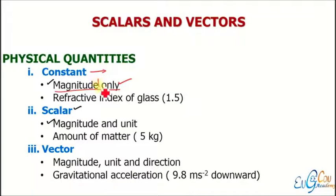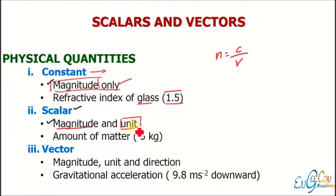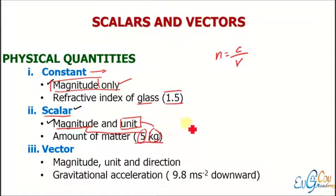For example, the refractive index of glass is represented as 1.5. Refractive index n equals c over v, which is a ratio of same quantities, so no unit exists — it is simply a number. Next, scalar quantities require both magnitude and unit for explanation. Examples include five kg (amount of matter), 37 degrees Celsius, 38 Kelvin, or ten moles.